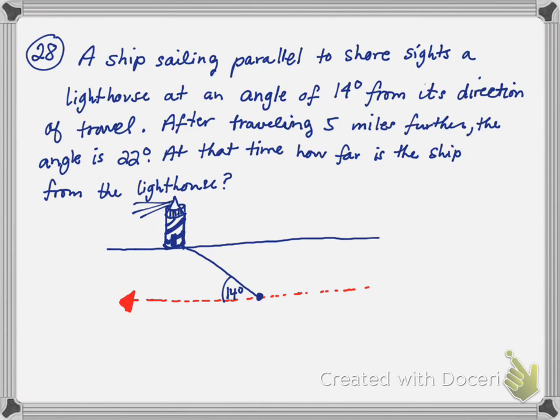Then, it moves 5 miles towards the left, the way I've drawn this, and it sights the lighthouse again, and this time the sighting is 22 degrees.